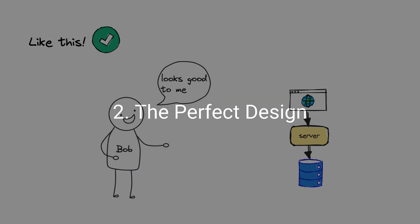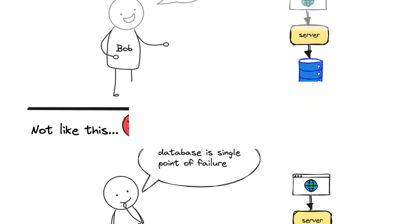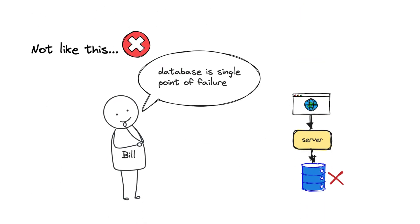Bob was good at drawing fancy block diagrams, but he didn't discuss the trade-offs of his architectural decisions and didn't care to identify the bottlenecks and single points of failure. But Bill talked about the alternative technologies and mentioned the trade-offs of each architectural decision. This way, he justified his decisions.